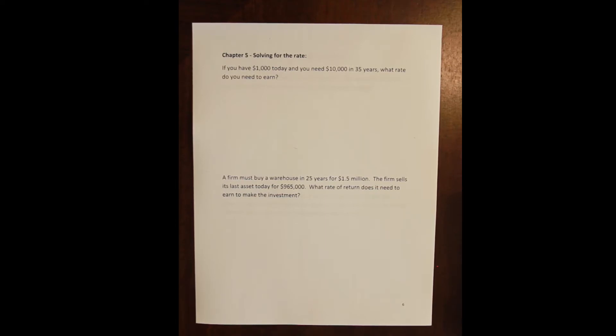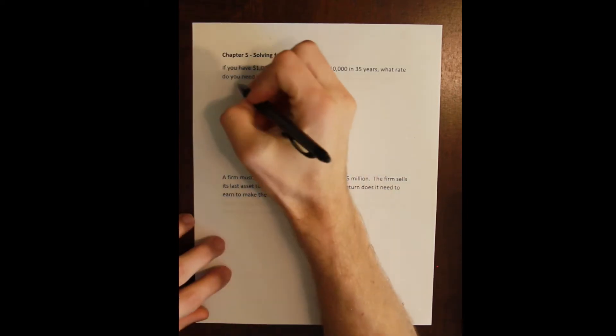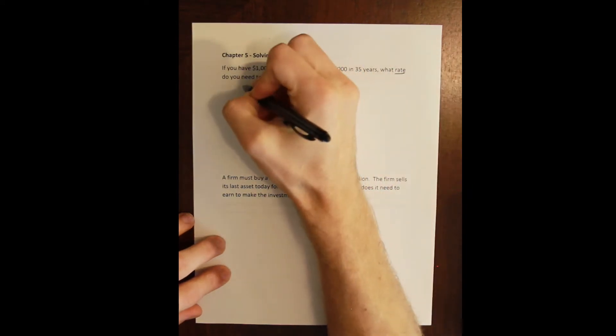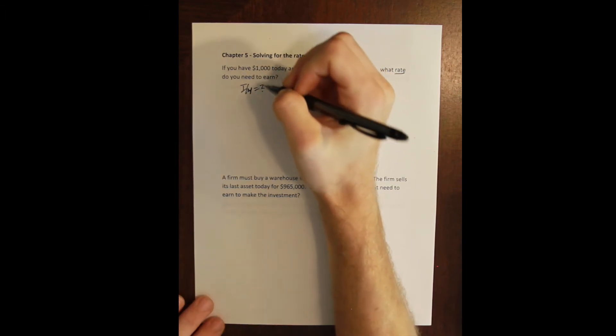We'll start by solving for a couple of examples where we're looking for the rate. For instance, let's say we start with a thousand dollars today and we need $10,000 thirty-five years from now. What rate do I need to earn in some imaginary investment account in order to get from 1,000 to 10,000 in 35 years? It's pretty clear here that we're solving for rate. We want to know IY.